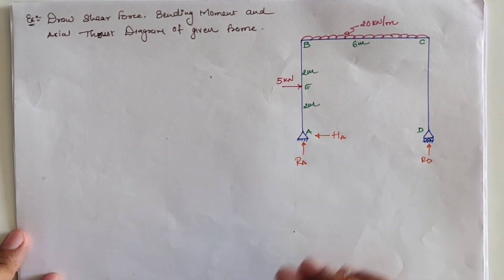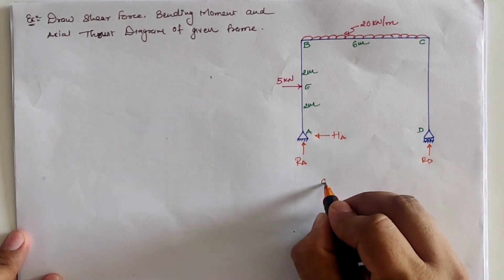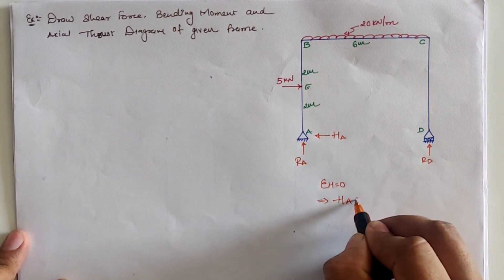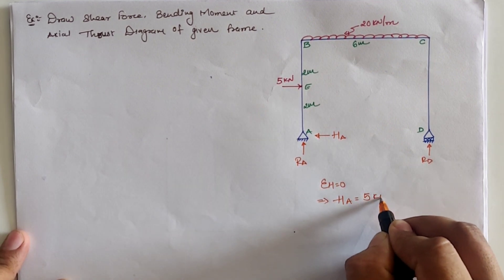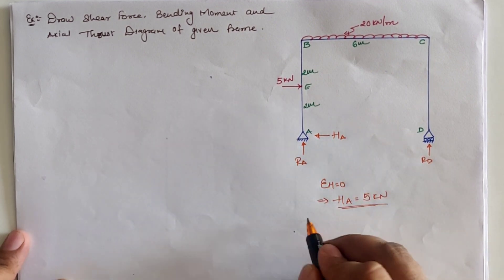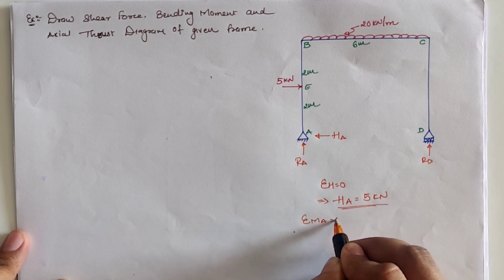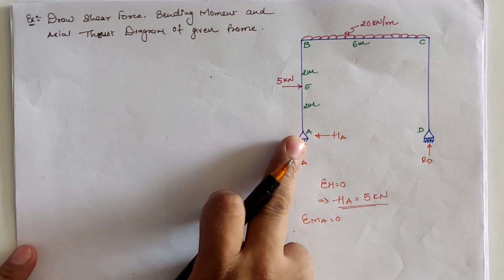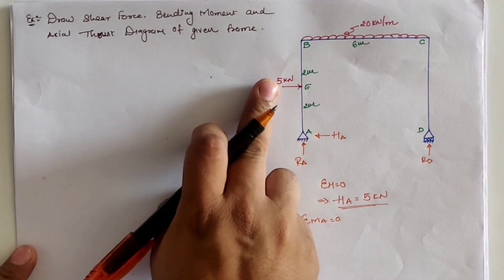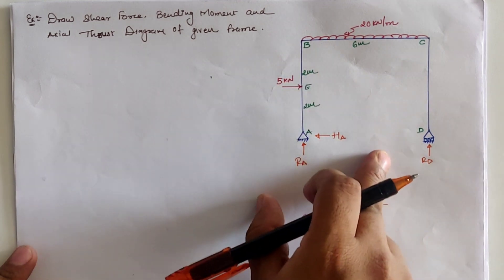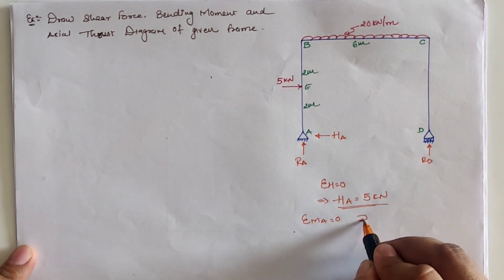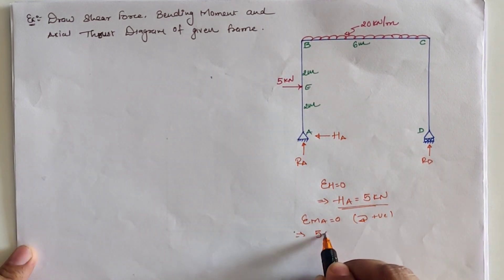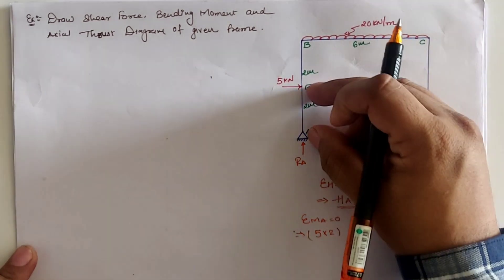We use three equilibrium conditions. From sigma H equal to zero, observing the figure the value of H_A is five kilo Newton. The second equation is taking moment at location A equal to zero. For the five kilo Newton load, the moment is clockwise, and we assume clockwise as positive, so it is five into a perpendicular distance of two meters.